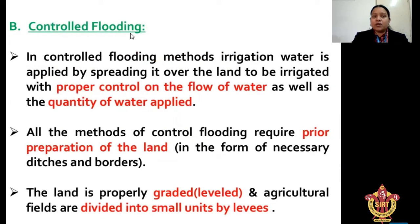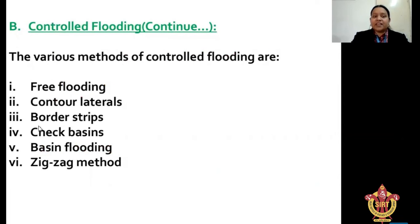Next is controlled flooding. In the controlled flooding method, irrigation water is applied by spreading it over the land to be irrigated with proper control of the flow of water as well as the quantity of water applied. All methods of controlled flooding require prior preparation of the land in the form of necessary ditches and borders. The land is properly graded and the agricultural field is divided into small units by levees. Controlled flooding is divided into various methods: free flooding, contour flooding, border flooding, check flooding, basin flooding, and zigzag method.